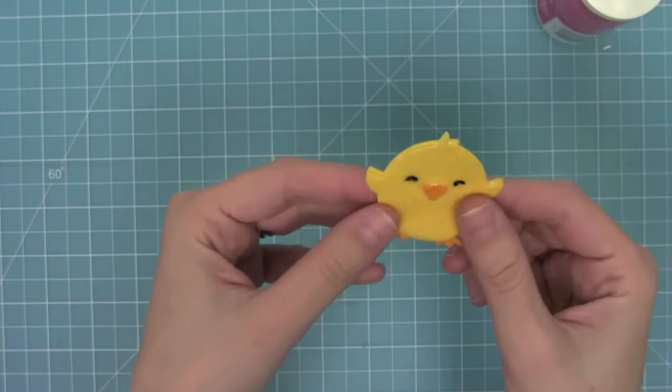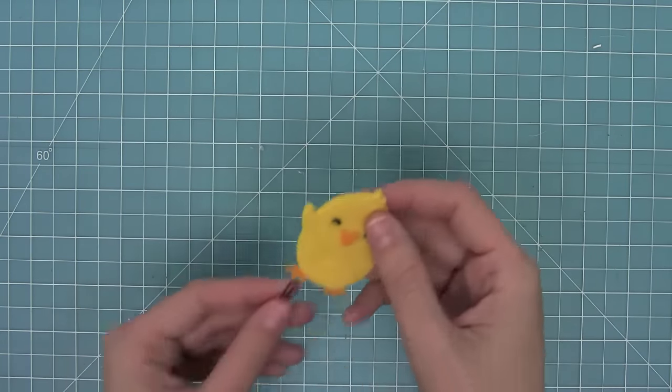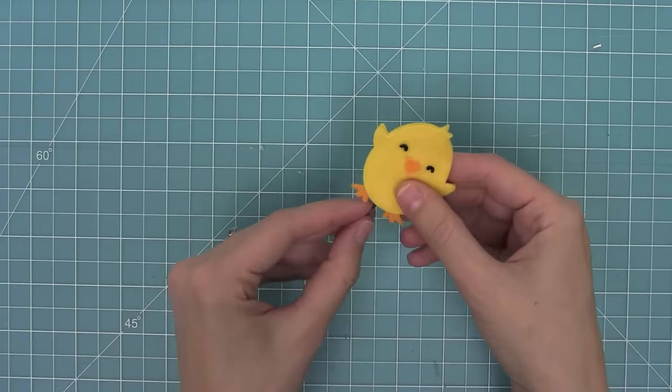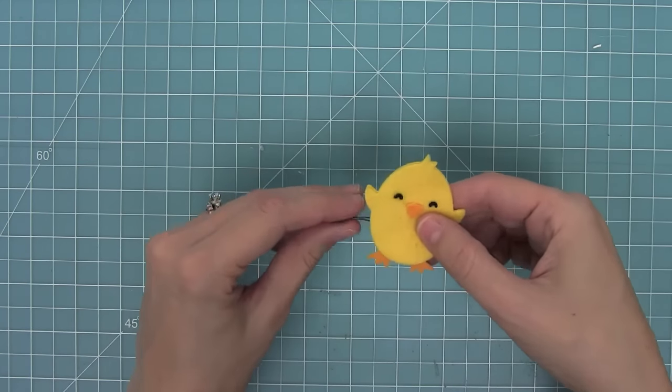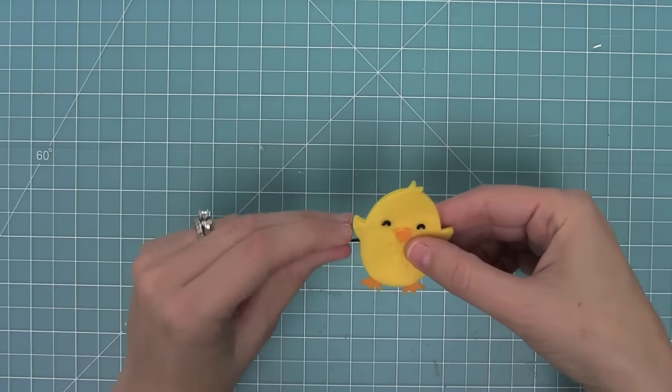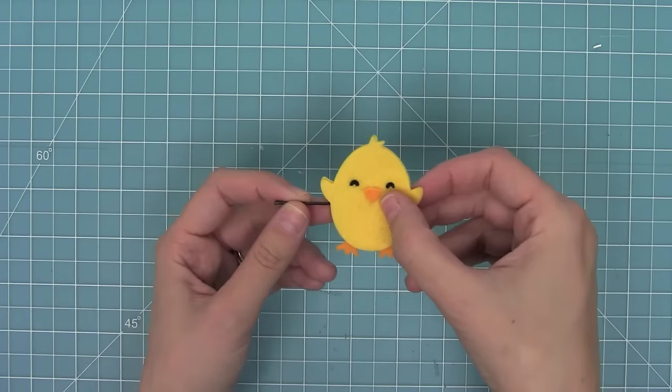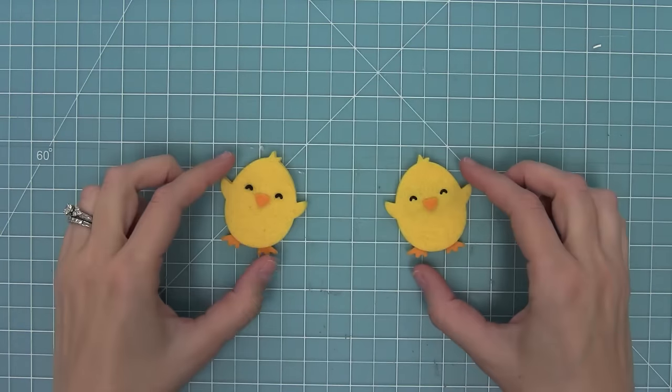One thing I thought would be really cute to do with this little felt chick would be to create a little pin for a little girl's hair so you could glue him on a bobby pin like this. I think it would be adorable in a little girl's hair but I had my heart set on creating a banner so I went ahead and started working on that.